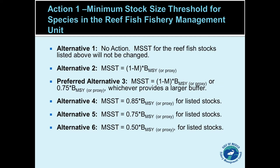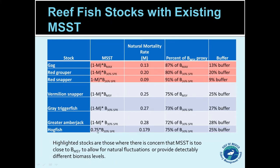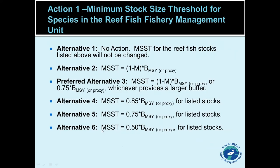There are six alternatives for what to do here, and these only affect those seven stocks. Alternative one, the no-action alternative, says the MSST for these seven reef fish stocks will not be changed — what was shown in the previous table remains as is. Alternative two says we'll use the formula for all of them — MSST equals one-minus-M times BMSY. Since we're already using it for all except hogfish, hogfish would be the only one affected, resulting in a narrower buffer.